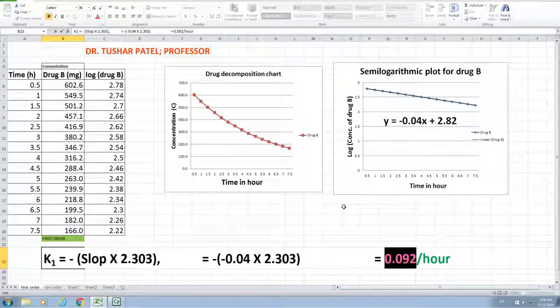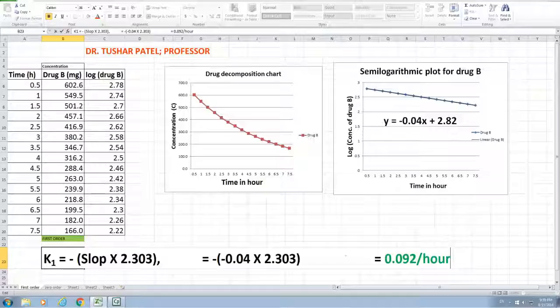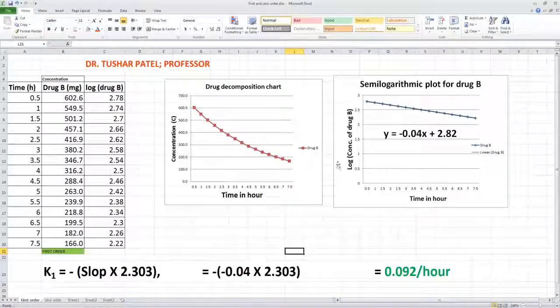The unit of the first-order reaction rate is time inverse. So this is the way by which you can calculate the first-order reaction rate using the graphical method.